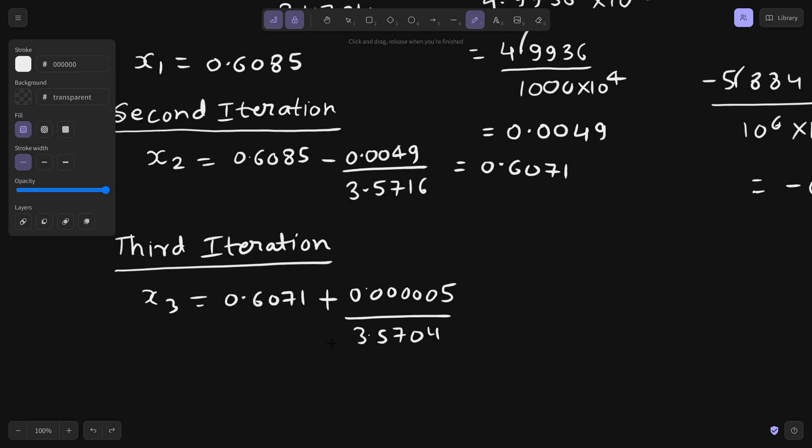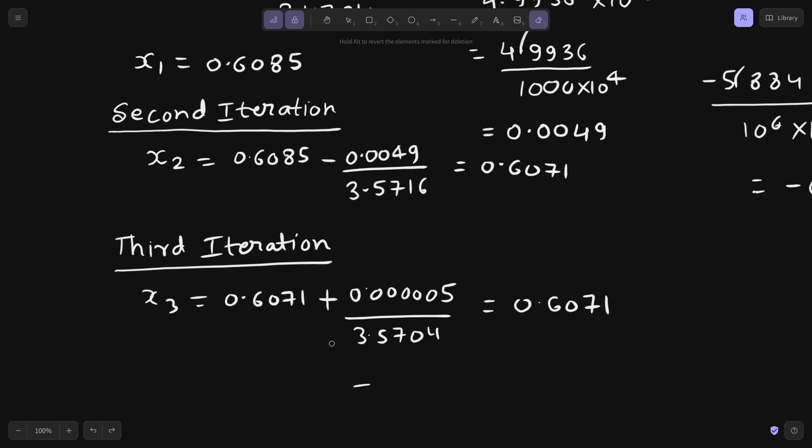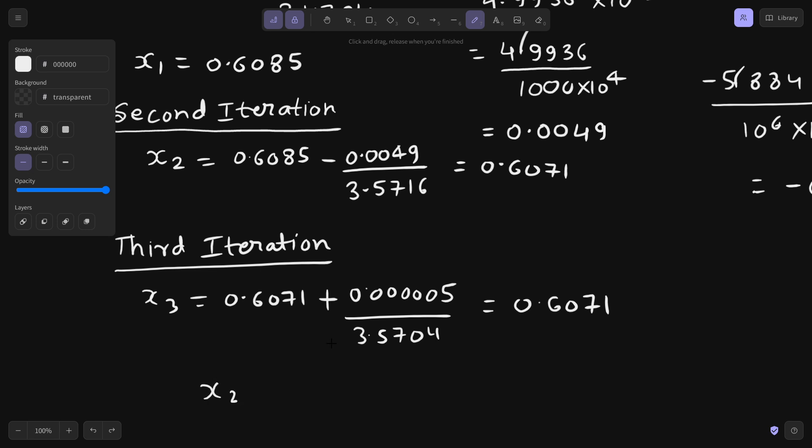Let's have our finger crossed and do the calculation. 0.6071 plus 0.00005 divided by 3.5704. Finally we have got it 0.6071. I am just writing 6071 because it matches. Let's clarify that x2 and x3 matches till 4 places of decimal.